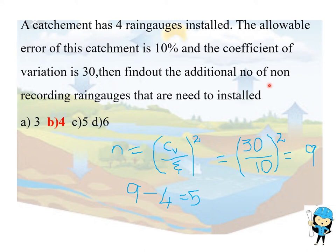We already have 4 raingauges, so 9 minus 4 equals 5. Among the 5 raingauges, 4 are non-recording raingauges and 1 is a recording raingauge.